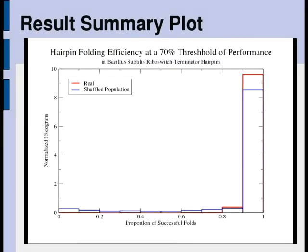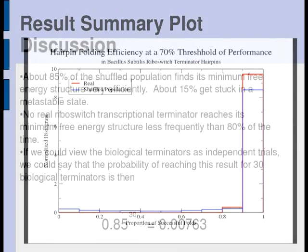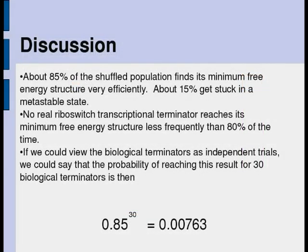In this summary plot, you can see the success rate increasing along the x-axis and a histogram of sequences in each bin along the vertical. We see that most of the randomly shuffled hairpins fold quite well and lie in the 90% success rate or higher bin, but also that there is a long tail of random hairpins that like to get stuck in metastable states. The real hairpins lack this feature. About 85% of the shuffled population finds its desired minimum free energy structure very efficiently, but 15% of them fail despite having a similar nucleotide content, equilibrium structure, and minimum free energy as the biological case. If we believed that 30 subtilis hairpins meant 30 independent trials, the probability of reaching this result would be quite low.